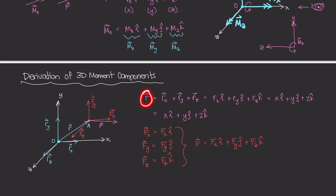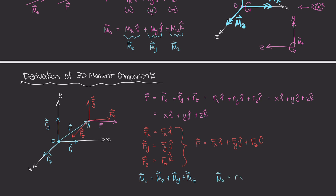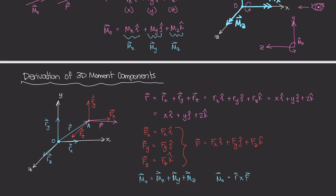Now that we have r and f, we know that the moment is given by Mo = r × f, where Mo has components mx, my, and mz. A good place to start is to take the position vector and force vector and plug them into this cross product equation, and hopefully get closer to finding these three values.